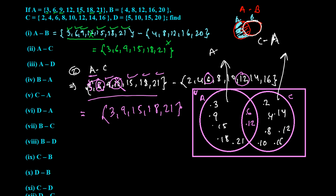Now we are going to deal with A difference D — found in A but not in D. The numbers in A but not in D: 3 — not in D, take it. 6 — not in D, take it. 9 — not in D, take it. 12 — not in D, take it. 15 — yes, it's in D, so skip. 18 — not in D, take it. 21 — not in D, take it. So our answer is {3, 6, 9, 12, 18, 21}.